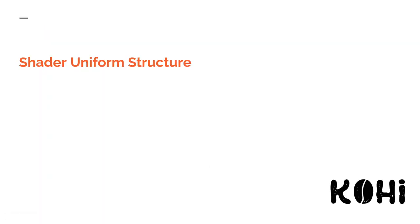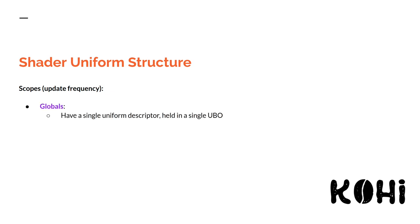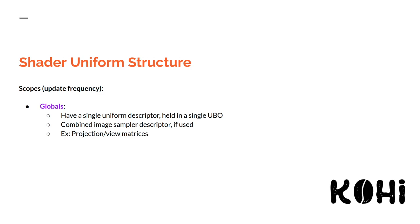Now let's talk about our shader uniform structure, which will be integral to how we're refactoring this. The first scope is globals. These typically have a single uniform descriptor, held in a single uniform buffer object. They can also potentially have a combined image sampler descriptor if we're using global textures. An example of something global would be either global textures or projection/view matrices, which is far more common.